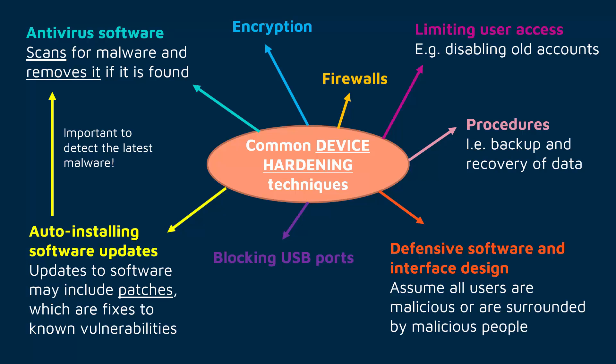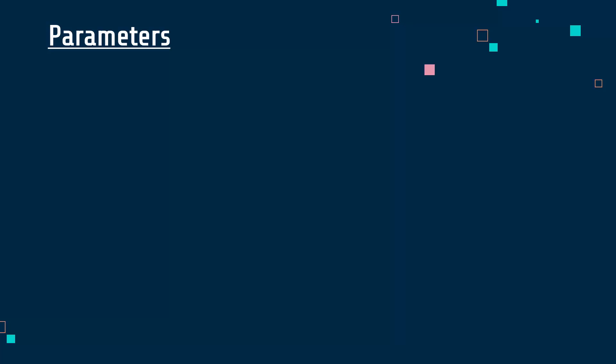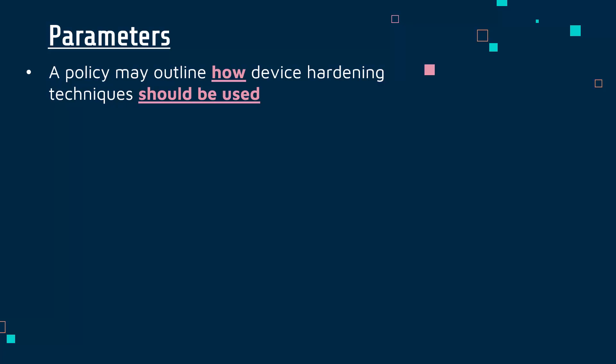The techniques I talked through are on the screen here. I won't go through each one again as they're covered in other videos, but there are different ways we can increase security on devices. Some are suitable in some contexts, some are not — it's a choice you have to make as a security manager. As a policymaker, you might set certain parameters in your policies, and a policy might be created to outline how to apply different device hardening techniques.